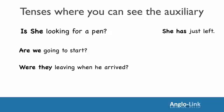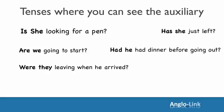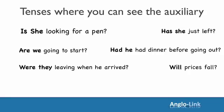Here we have the present perfect with the auxiliary 'has.' Just move it before 'she.' Has she just left? The past perfect: 'He had had dinner before going out.' Just move 'had' before 'he.' Had he had dinner before going out? And finally with the future tense 'will': move 'will' to the beginning of the sentence before the subject. Will prices fall?